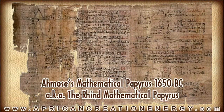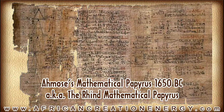Ahmose's mathematical papyrus from roughly 1650 to 1680 BC, also known as the Rhind mathematical papyrus, has several equations that deal with calculating the Seqed. As we can see on the Rhind mathematical papyrus, there are at least five to six different triangles where they were working out different geometric and trigonometric equations related to the Seqed.